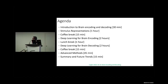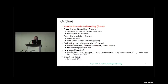We are now at deep learning for brain decoding. The outline covers: intro to brain decoding, the difference between encoding and decoding, what is the input to the encoder versus decoder model, and well-posed versus ill-posed problems.